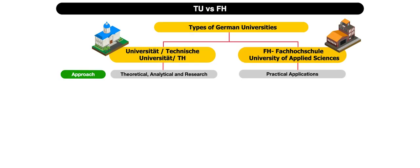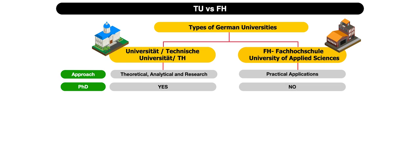The second difference: if you want to do a PhD, you only have the option of TU, University, or TH. FH is not an option because FH currently does not offer PhDs. In the future, we don't know, but right now if you want to do a PhD, TU, TH, and universities are the only options.